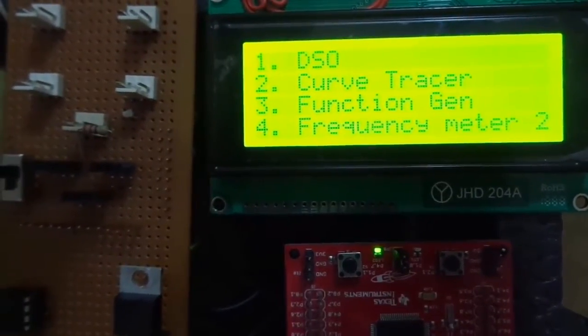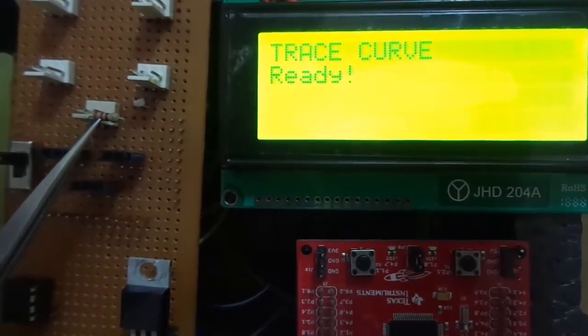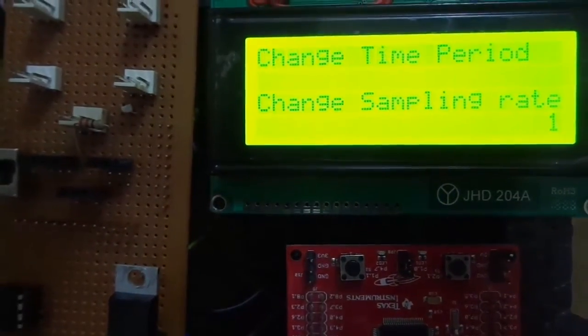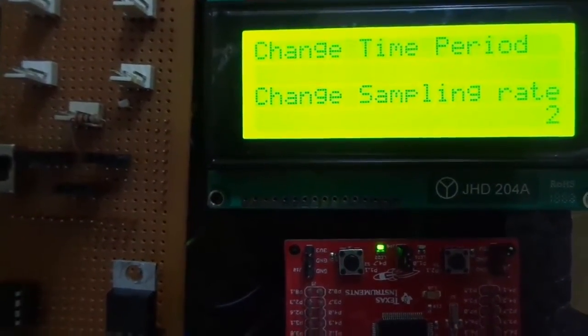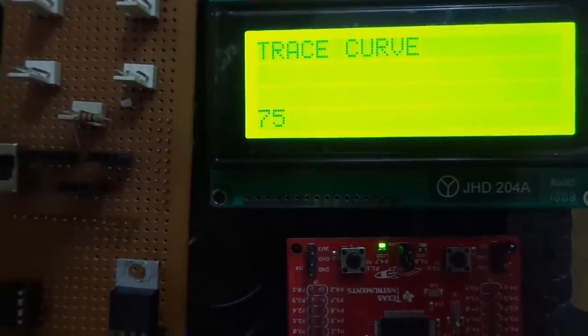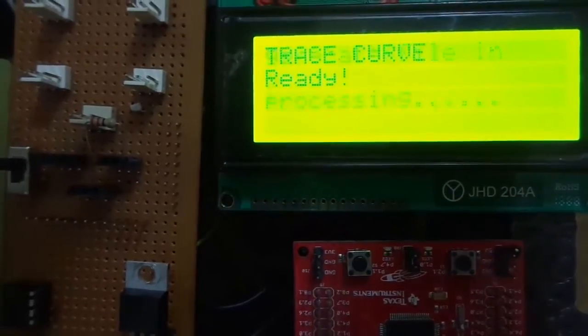Next, coming onto the curve tracer module of our system. Here we have used a 220 ohm resistance. We can set the sampling rate and the time period of the system. By pressing the enter key, the curve tracing process will be started.